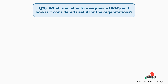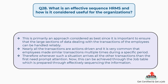Question number 28: what is an effective sequence HRMS and how is it considered useful for organizations? The answer is, this is an approach considered best since it is important to ensure that large sections of data dealing with employee transactions can be handled reliably. Nearly all transactions are action-driven and employees may make similar transactions multiple times during a period. This can be achieved through a job table prepared by effectively sequencing the information.